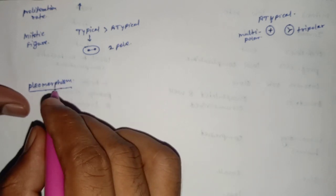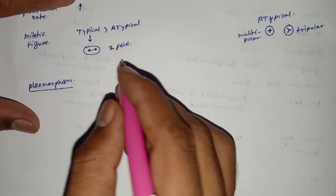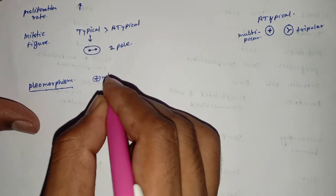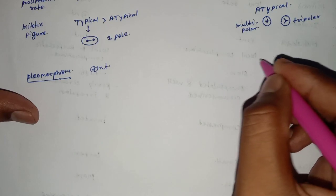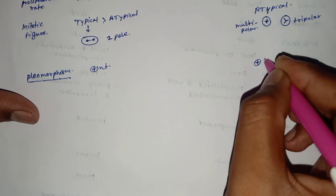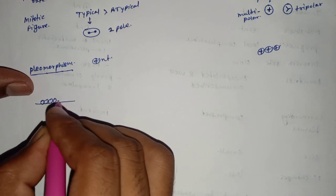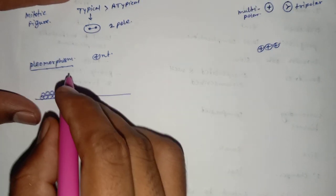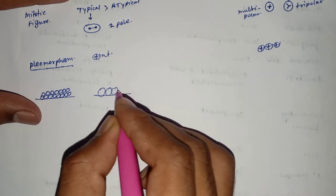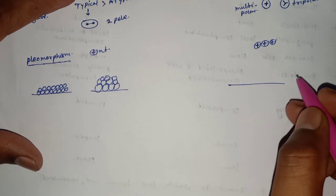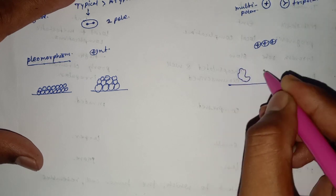Pleomorphism means the variation in size and shape of the tumour cell. Pleomorphism is present in dysplasia and is more pronounced in anaplasia. In normal tissue the cells are uniform, in dysplasia there is variation in size and shape, and in anaplasia this variation is very high.